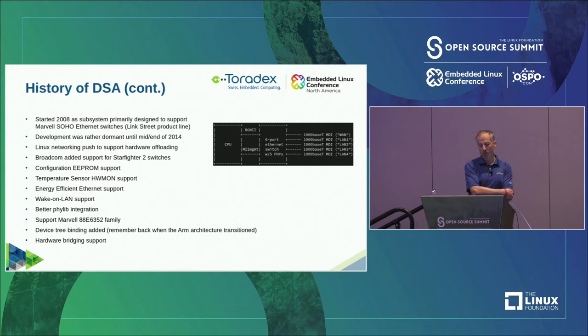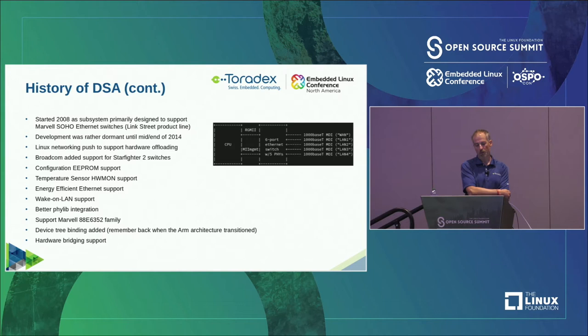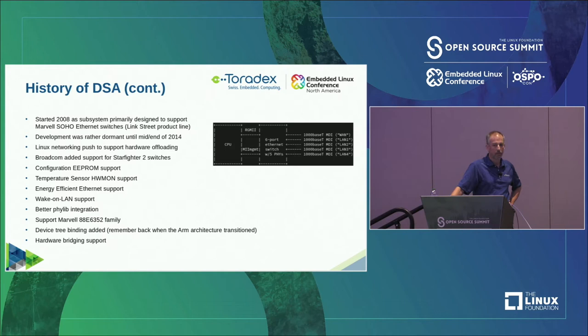Another thing added was temperature sensor support — switch fabric chips get warm and you want thermals to be right — integrated with the regular HWMON subsystem. Other additions included energy-efficient Ethernet support, Wake-on-LAN support so any port can do Wake-on-LAN, better PHY integration, further Marvell switch families, and device tree binding was crafted. This was around the time the ARM architecture transitioned, since many switches use some kind of ARM processor as the control processor.